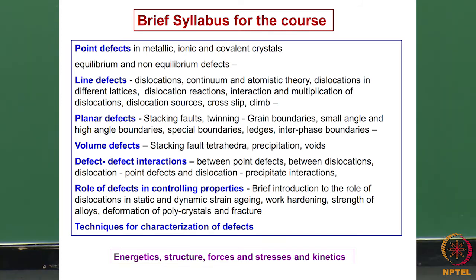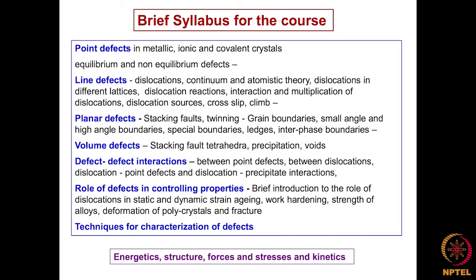Planar defects — if you consider stacking fault, that is one defect which we will be looking at in great detail. Then twinning is another one — twinning is more like a bulk defect but the interfaces between the twinned and untwinned region are very interesting. Then grain boundaries as I mentioned are planar defects — small angle boundaries and high angle boundaries — then special boundaries, ledges, interface boundaries, these are all aspects we will be considering. Volume defects which are present are, as I mentioned, stacking fault tetrahedra and precipitation and voids, but in these aspects I will mostly be talking about stacking fault tetrahedra and will not be going into precipitation and voids.